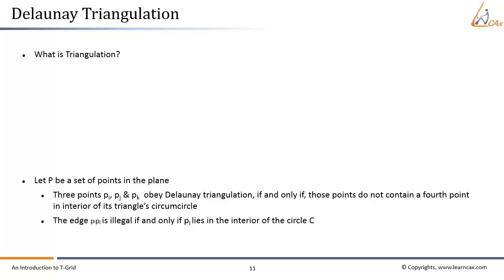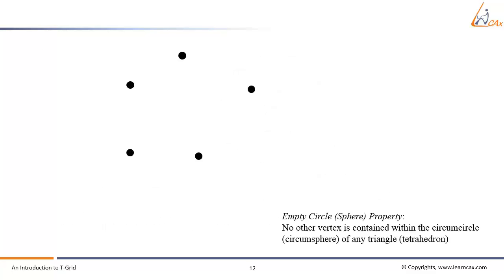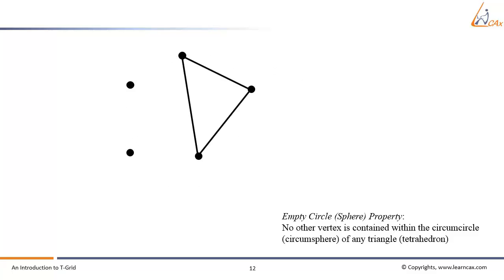Second condition: two points P-I and P-J in P form an edge of the Delaunay graph of P if and only if there is a closed disk C that contains P-I and P-J on its boundary and does not contain any other point of P. Now let's have a look at how Delaunay triangulation works, so that no other vertex is contained within the circumcircle or circumsphere of any triangle or tetrahedron.